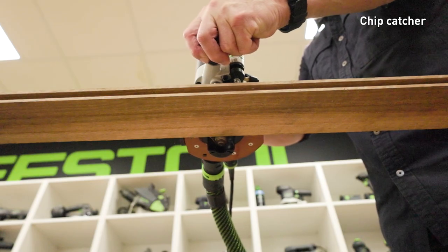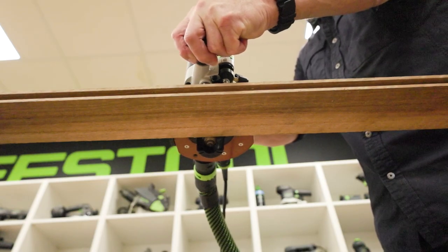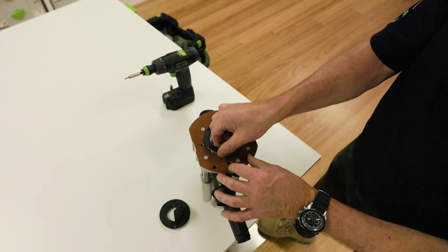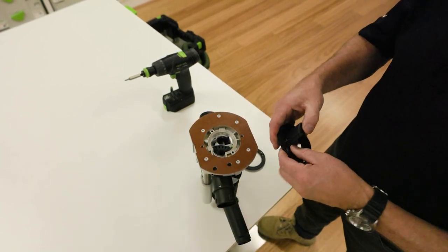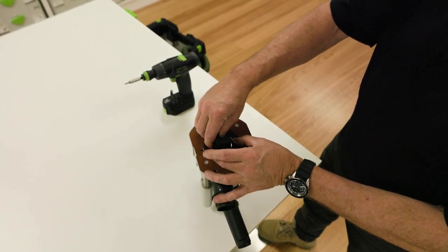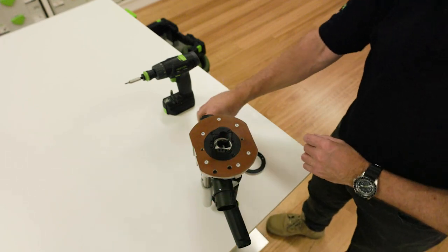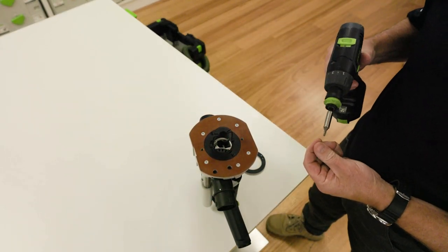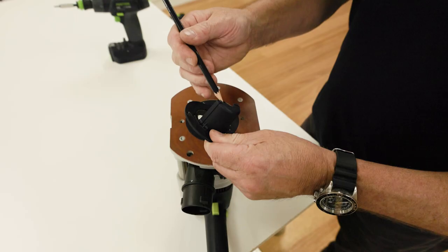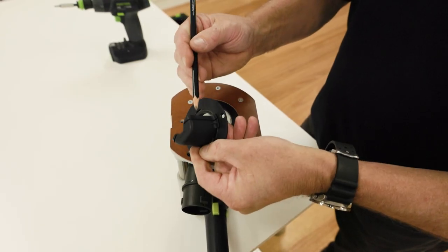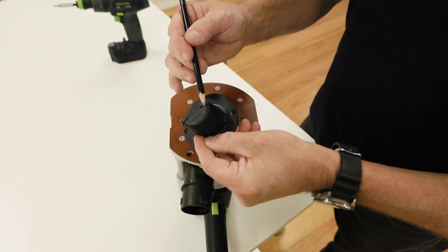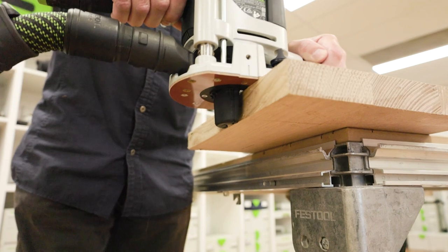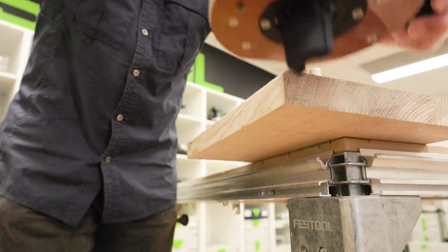Using the chip catcher, the efficiency of the extraction can be increased when routing edges. Fit the chip catcher to the plate after removing the covering from the base. The hood can also be trimmed off along with the grooves and can then be reduced in size. The chip catcher can then be used for interior radiuses up to a minimum radius of 40mm.